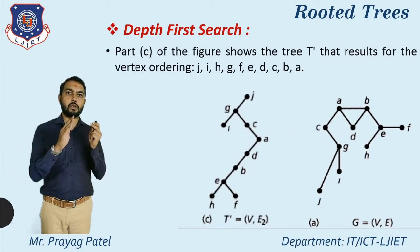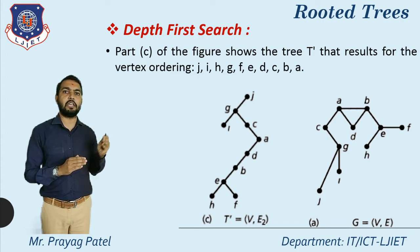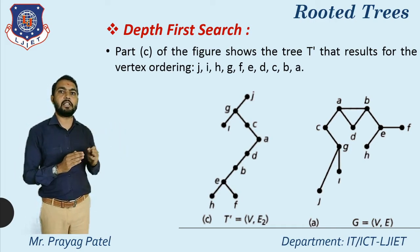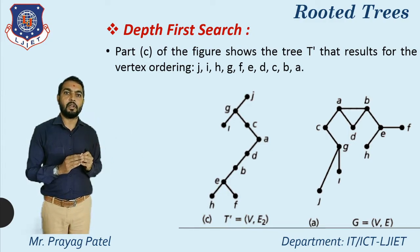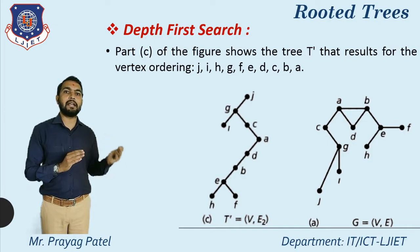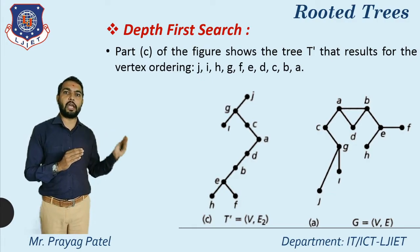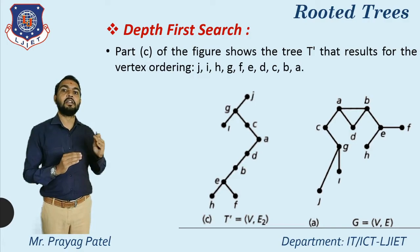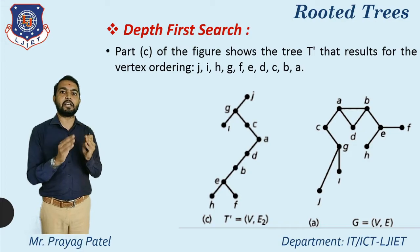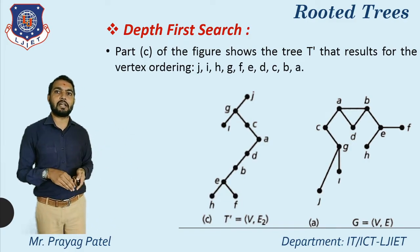If the given figure is the same but the order is reversed — j, i, h, g, f, e, d, c, b, a — the result differs. In this case, first consider node j, which becomes the root node. From j, path to g is possible; from g, paths to i and c. Since the order is reversed, i comes before c. Visit i, then c, then c–a, then a–d, then d–b, then b–e, then e–h and e–f — visiting h first, then f. This figure is the resultant DFS tree for the reverse order.